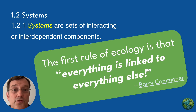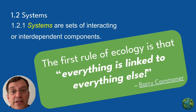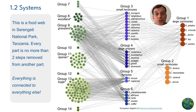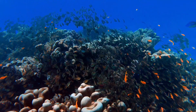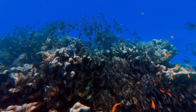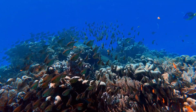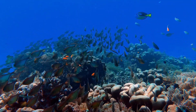Systems are sets of interacting or interdependent components that form a functional whole. In ecology, everything is interconnected — it's all connected to everything else, from the tiniest microorganisms to entire ecosystems. Take a coral reef for instance: it's a complex system where coral polyps, fish, algae, and countless other organisms interact with one another, creating a vibrant underwater world.